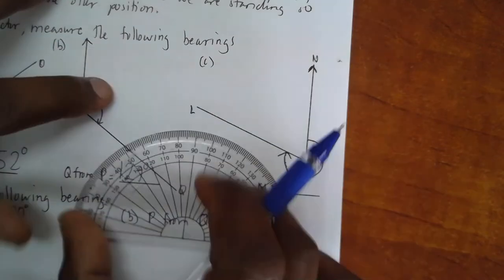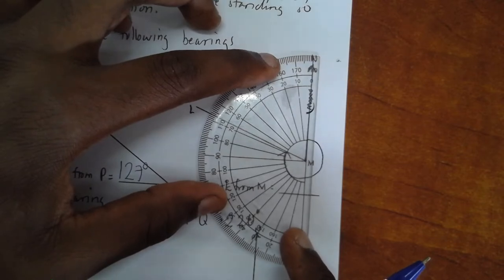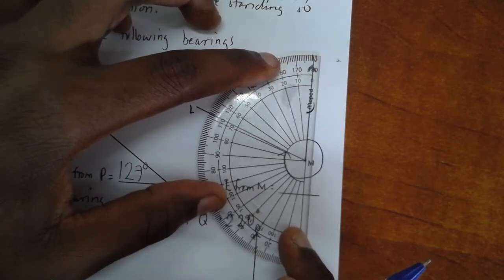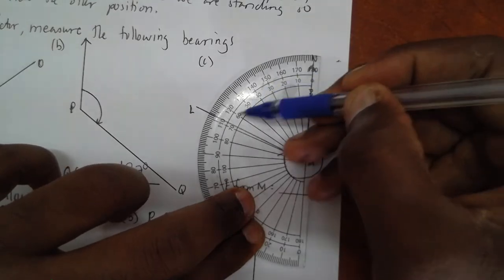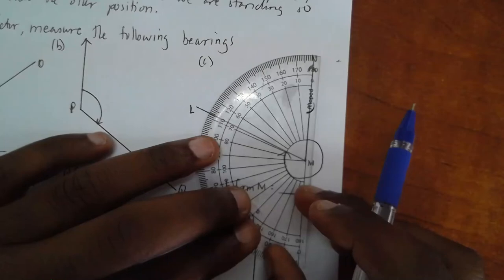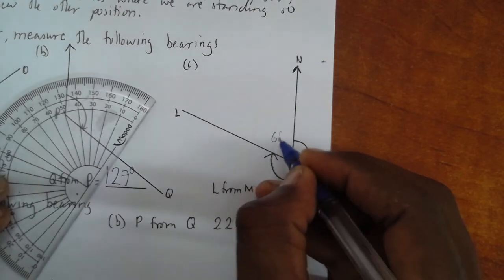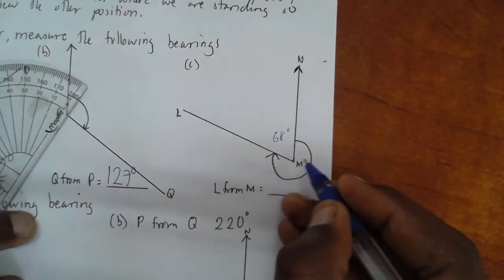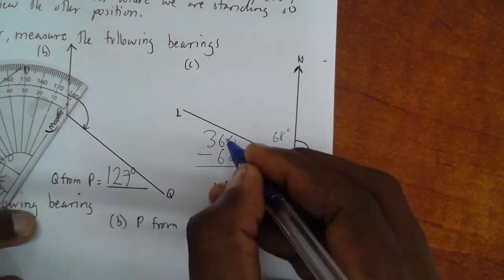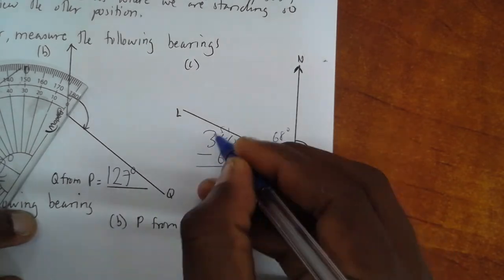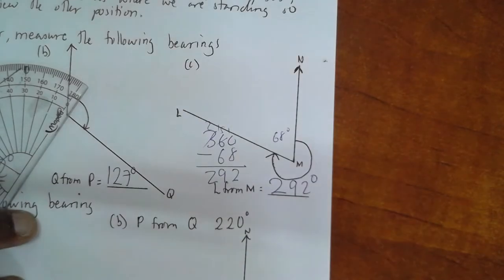Or we shall keep our protractor on the opposite direction so that we can measure the unwanted angle first. Like what I am doing now. If I see zero is here. 10, 20, 30, 40, 50, 60, 67, 68. So this gives me 68 degrees. Meaning, this part which is not wanted is 68. How do I get the part which is wanted? I know the complete angle is 360. If I take away the angle which is not wanted, then I will get the wanted angle which will be 292.